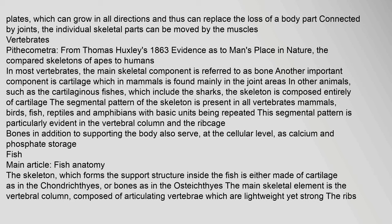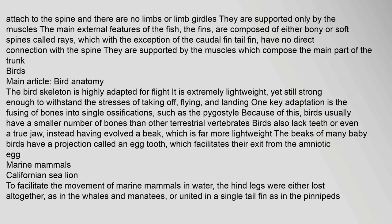The skeleton of fish is either made of cartilage, as in the chondrichthyes, or bone, as in the osteichthyes. The main skeletal element is the vertebral column, composed of articulating vertebrae which are lightweight yet strong. The ribs are attached to the spine and there are no limbs or limb girdles; they are supported only by the muscles. The main external features of the fish, the fins, are composed of either bony or soft spines called rays, which, with the exception of the caudal fin (tail fin), have no direct connection with the spine. They are supported by the muscles which compose the main part of the trunk.